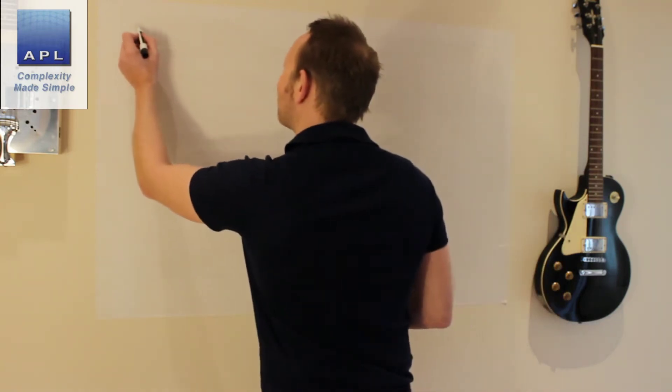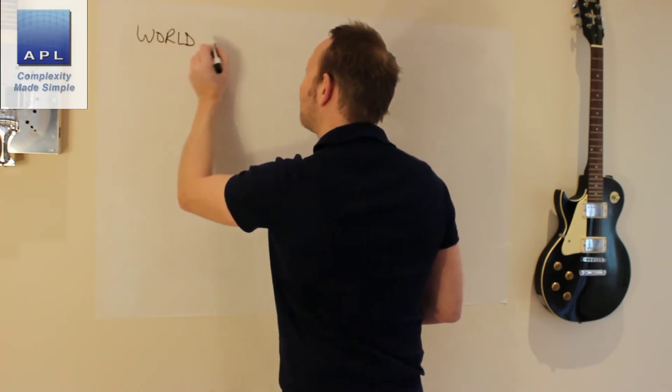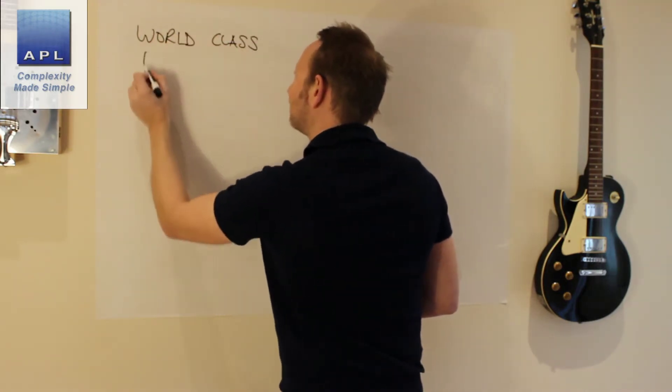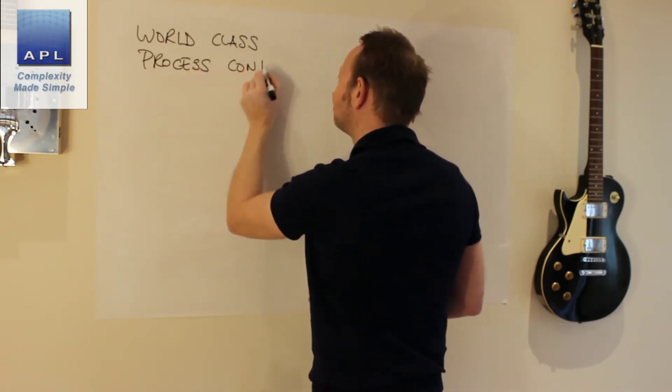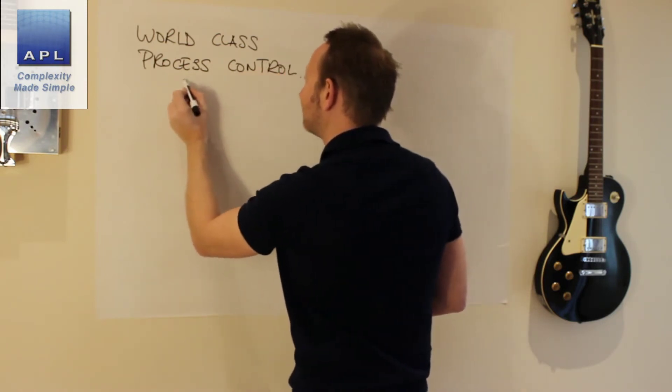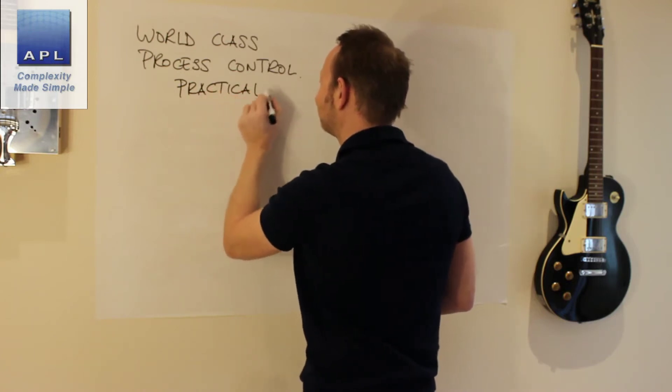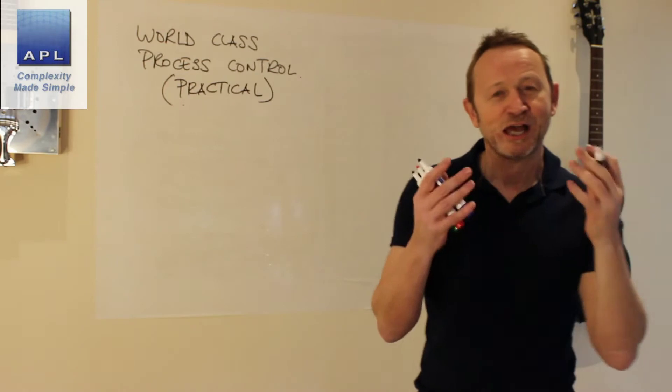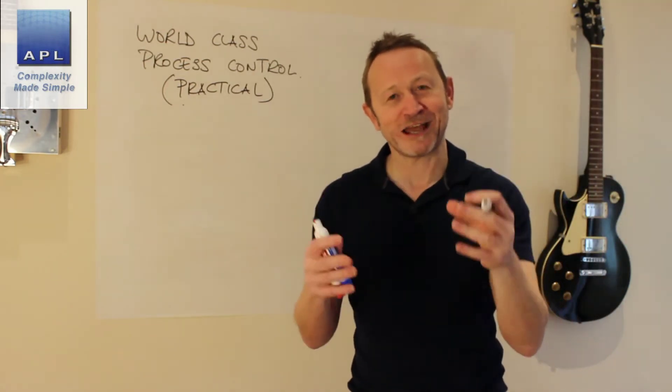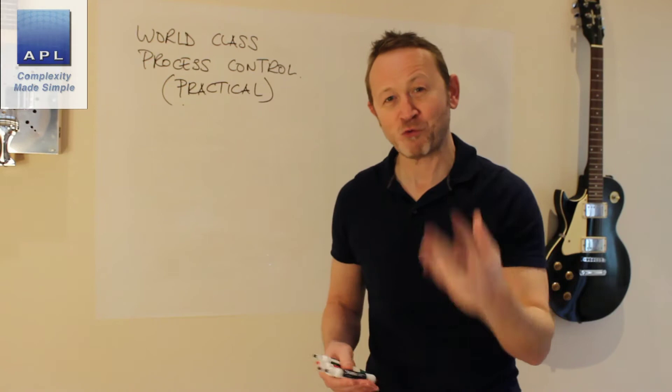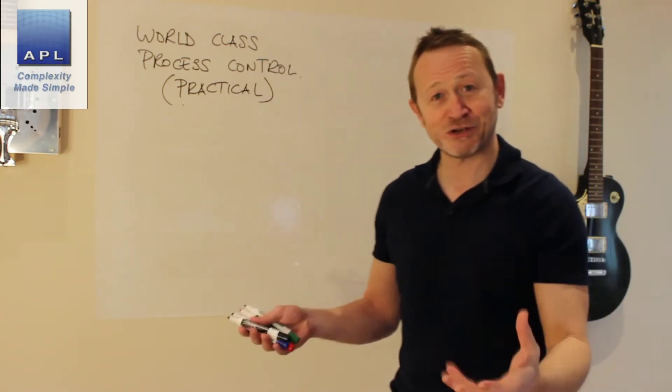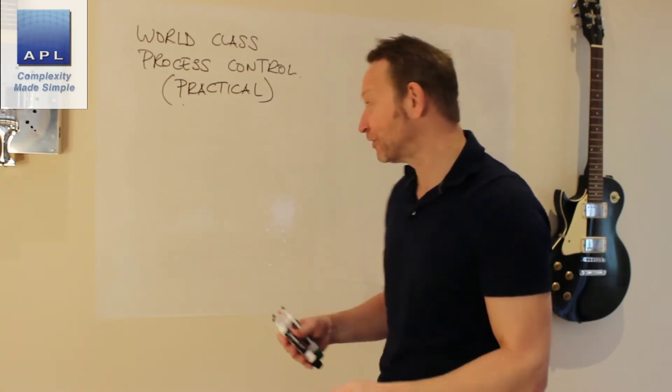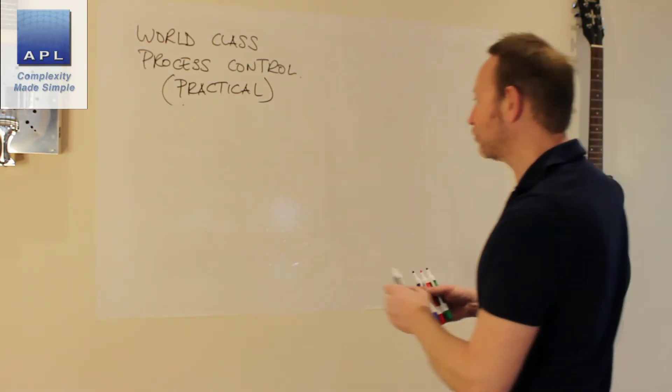So we are talking world-class process control and for me it's on a practical level. How do companies get their processes under control? How do world-class companies do this in a real sense so that it just works every time, all the time? Let's look at this.